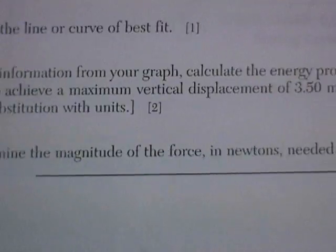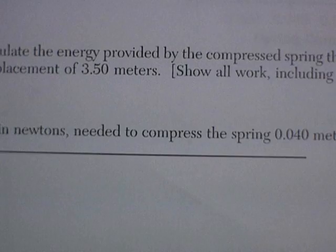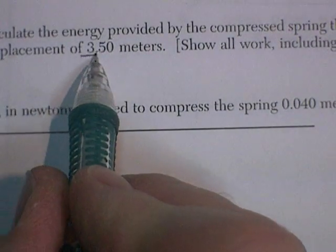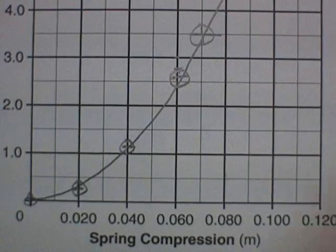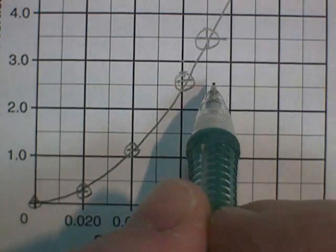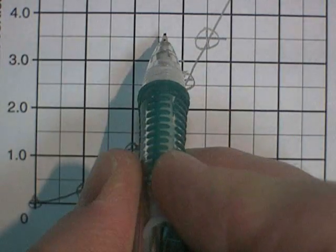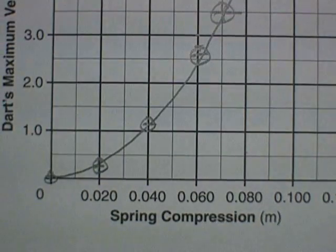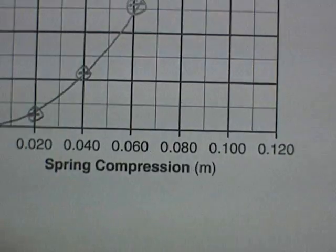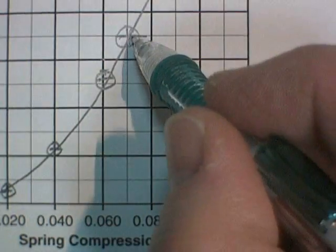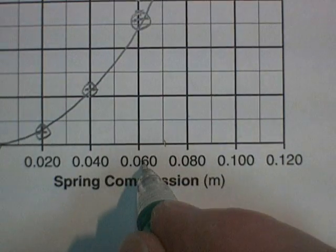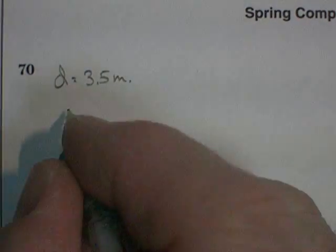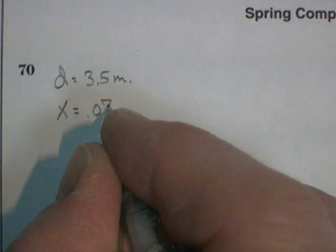Question 70 says, using the information from your graph, calculate the energy provided by the compressed spring that causes the dart to achieve a maximum vertical displacement of 3.5 meters. Calculate the energy. Show all work and everything. So that's right about here. They didn't give us the numbers for 3.5. They want us to look at the curve on our chart. So there's 3.5. And so I've got a vertical displacement. Distance upwards is 3.5 meters. And I've got a spring compression. And at 3.5, it corresponds to 0.06, 0.07, 0.08. And I'm going to say a spring compression of 0.07 meters.